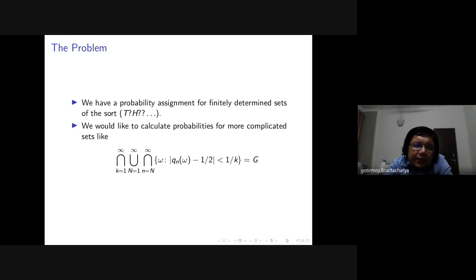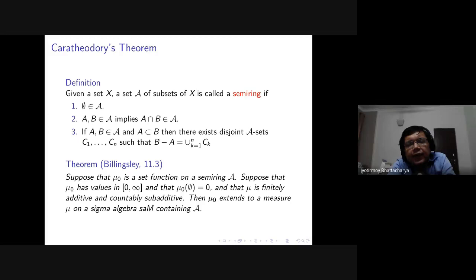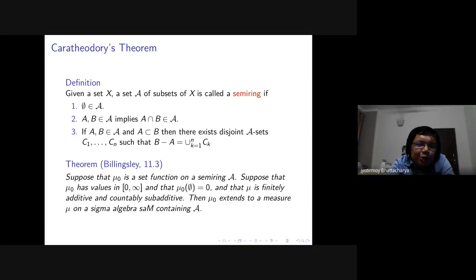Remember from last lecture we defined a sigma algebra, where a sigma algebra is a collection of sets such that the entire space X is there, it is closed under complements, and it's closed under countable unions. Basically, a sigma algebra has to be quite rich because all kinds of set-theoretic operations don't take you outside it. We want a sigma algebra in the output of our method — the final measure should be defined over a sigma algebra because we want our output to be rich.